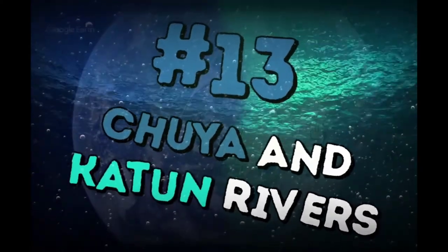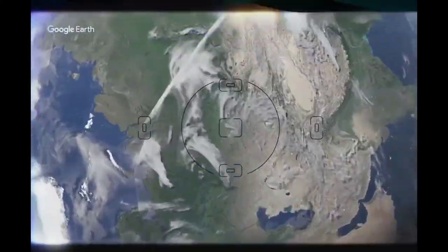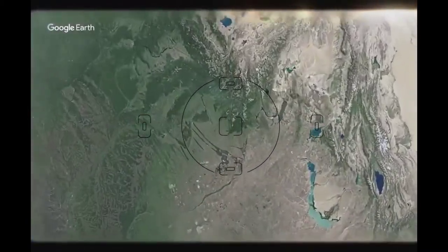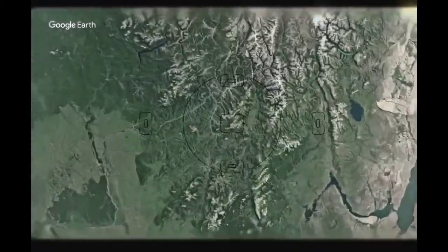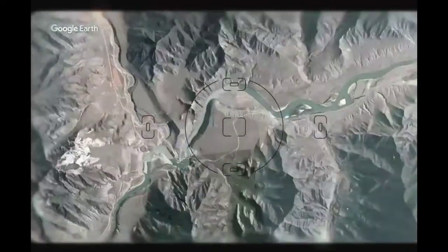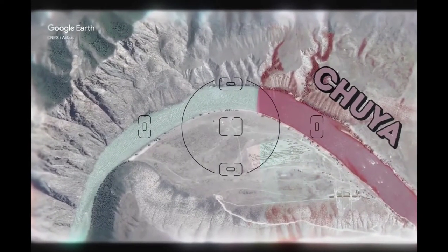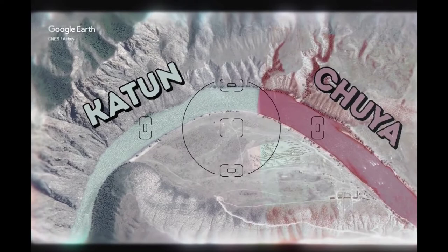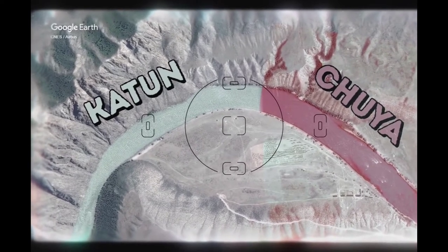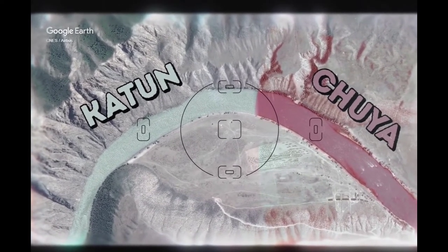Chuya and Katun rivers meet in the Altai Republic, Russia. The water of the Chuya has an unusual cloudy white color here and looks dense and thick. Katun is clean and turquoise. Flowing into each other, they form a single two-colored flow that does not mix for some time.